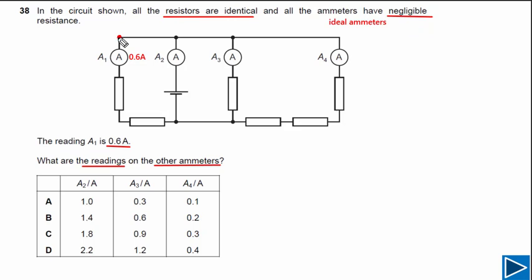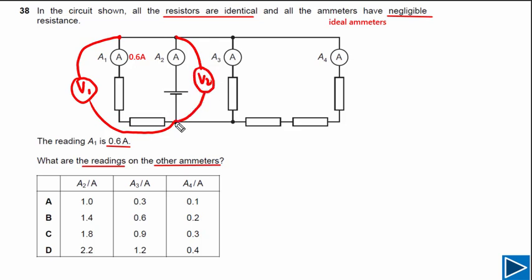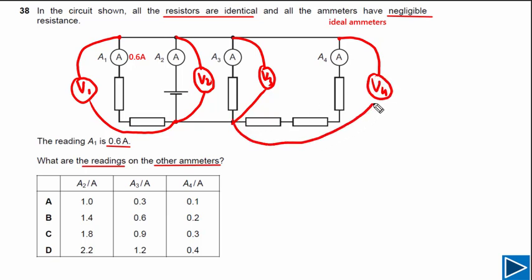First, let's connect voltmeters across different branches. We place voltmeter V1 across the first branch, a second voltmeter V2 across the second branch, a third voltmeter V3 across the third branch, and voltmeter V4 across the fourth branch. This is the main idea you need to understand.